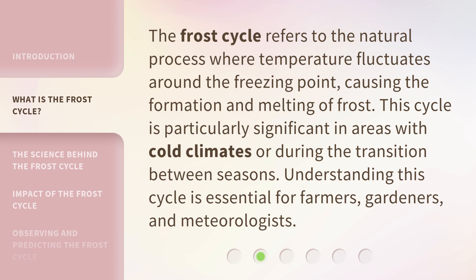The Frost Cycle refers to the natural process where temperature fluctuates around the freezing point, causing the formation and melting of frost. This cycle is particularly significant in areas with cold climates or during the transition between seasons. Understanding this cycle is essential for farmers, gardeners, and meteorologists.